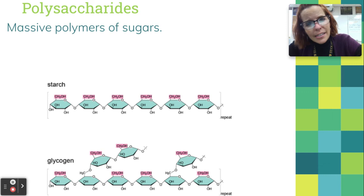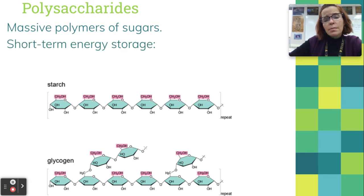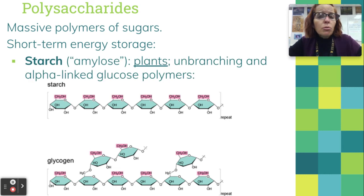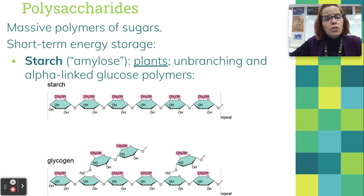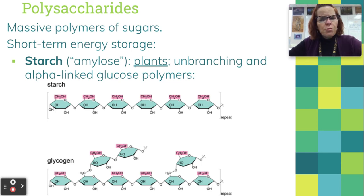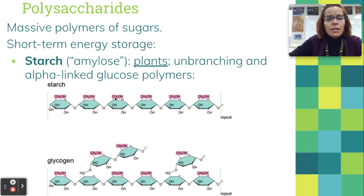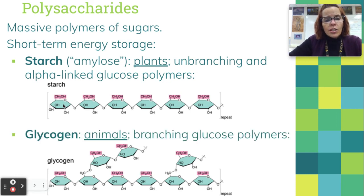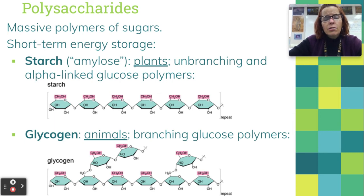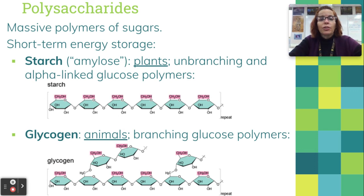The last section on carbohydrates covers polysaccharides — our polymers. They can be enormous molecules used for energy storage — both short-term and long-term. There are three you definitely need to know. The first is starch, also called amylose, which is made by plants. It's an unbranching, alpha-linked glucose polymer. Starch is actually pretty brilliant — remember your mitochondria need glucose — so starch is glucose after glucose after glucose linked together. It's a very high-energy molecule, and it just takes time for your body to pluck off each glucose, but you get a lot of energy from starch.